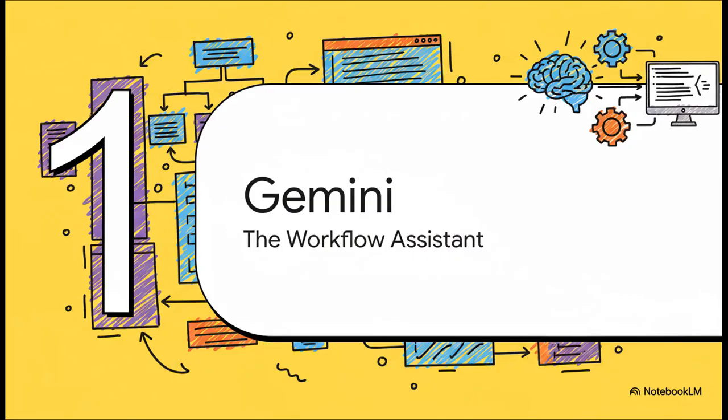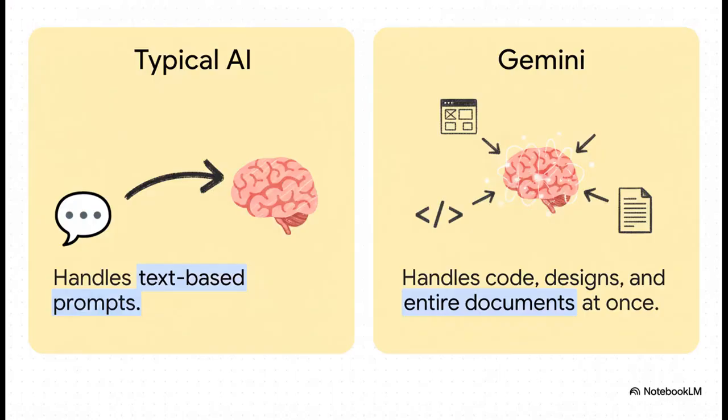Okay, so first up, let's talk about Gemini 3.0. The best way to think about this thing isn't just as another AI model, but as this incredibly powerful assistant that's built for your messy, complex, multi-step projects from start to finish. So what really makes Gemini different? Most AI is pretty good with text, right? But Gemini is truly multimodal.